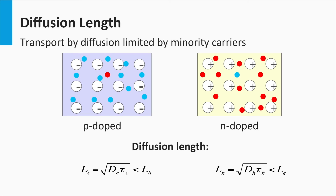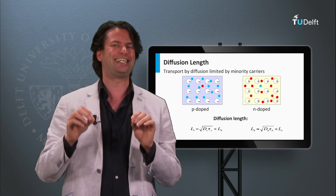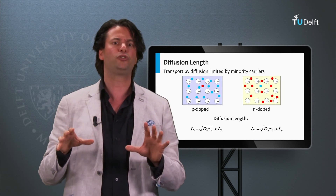Now let's consider an n-doped semiconductor material. The electrons — shown as red dots — are the majority charge carriers and the holes are the minority charge carriers. The electrons have a small probability of meeting a hole, so the recombination rate is small. On the other hand, the holes have a high probability of meeting one of the electrons, as the electron density is many orders of magnitude higher. This means the recombination rate for the holes is high — in other words, the diffusion length of the holes is shorter than that of the electrons. Important to remember: in a doped material, the minority charge carriers have a short diffusion length relative to the majority charge carriers.